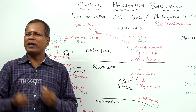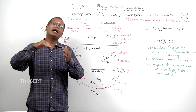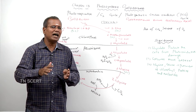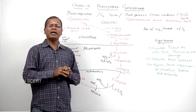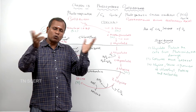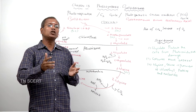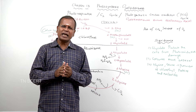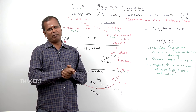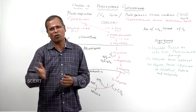In contrast, respiration that occurs even in the absence of sunlight is called dark respiration or normal respiration. That dark respiration takes place in all normal living cells, and the cell organelle involved in all of them is mitochondria.